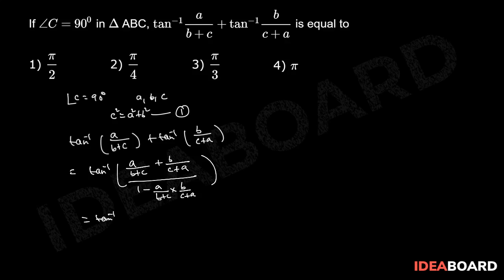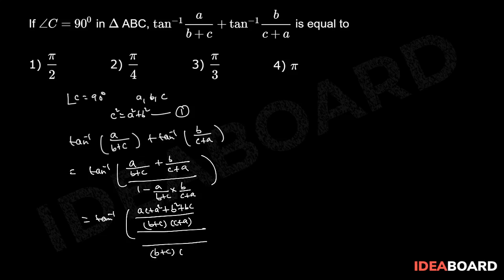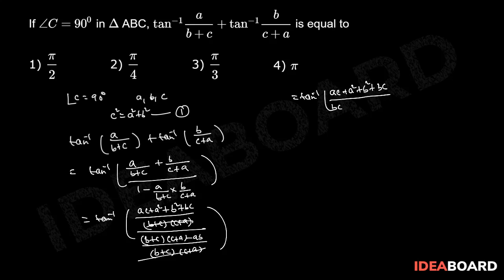That equals tan inverse of — in the numerator, (B+C)(C+A) is the LCM. Therefore, we have AC + A² + B² + BC in the numerator, and in the denominator (B+C)(C+A) minus AB, which expands to BC + AB + C² + AC - AB.